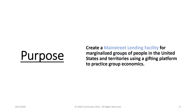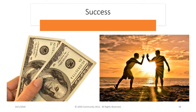Community 2612's single purpose is to create a main street lending facility for marginalized groups of people in the United States and territories using a gifting platform to practice group economics. This is not just another job, multi-level marketing, or networking system that requires you to purchase inventory or have employees. You don't have to make a large upfront investment. You don't need a license or degree. You get an opportunity to work from home — part-time, full-time, or anytime — and make money with large returns. All you have to do is share an invitation for a quick conversation about economic elevation. Once you share some quick information with a couple of friends and drop $200 into the community, you get $1,600 back in gifts from other members.